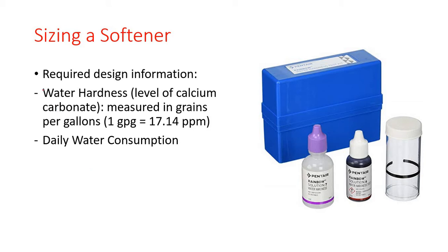The first information is the water hardness, which is the level of calcium carbonate in the water. This is measured in grains per gallon. We know that one grain per gallon is equivalent to 17.14 ppm, which is important for the conversions and calculations later on.